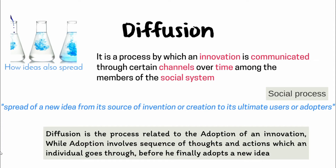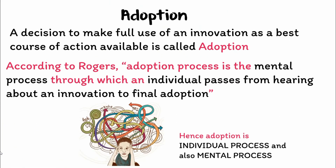In general, diffusion is the process related to the adoption of an innovation, while adoption involves a sequence of thoughts and actions which an individual goes through before finally adopting any idea or innovation. Because of that, diffusion is a social process while adoption is an individual and mental process. A decision to make full use of an innovation as the best course of action available is called adoption.